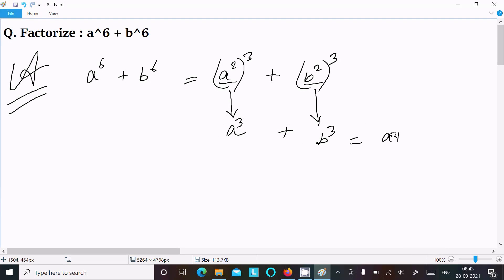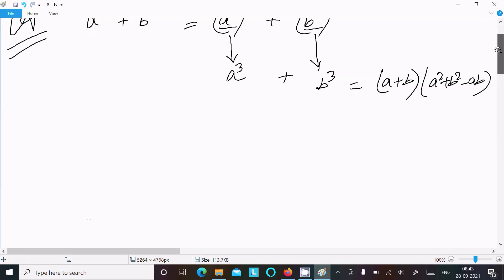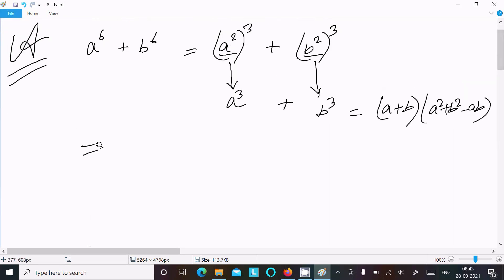That is a plus b, a^2 plus b^2 minus ab. Now the next is here, so a plus b, that means a is a^2 plus b^2.